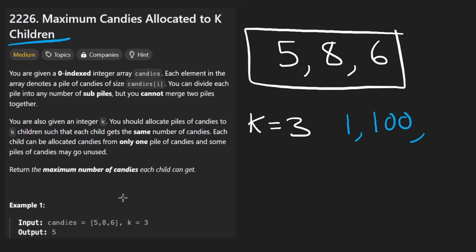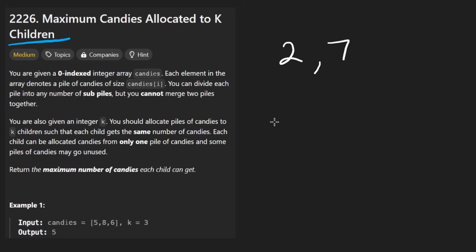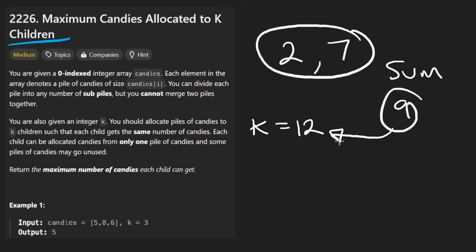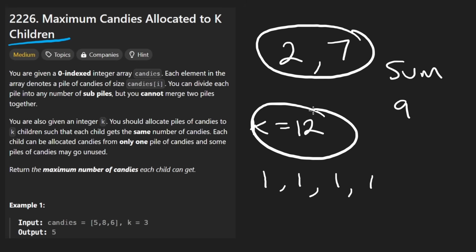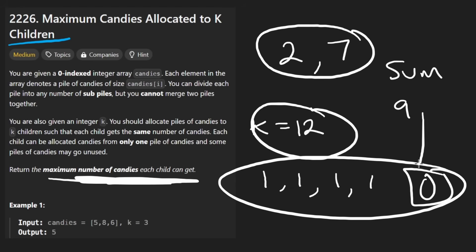Here's an interesting edge case: if you had a 2 and a 7 and k equals something like 12, the total sum of candies is only 9. We can't split it into k different positive piles, so even though we can have 9 piles of 1, we don't have 12 piles. So the maximum that every child can get is going to be 0.